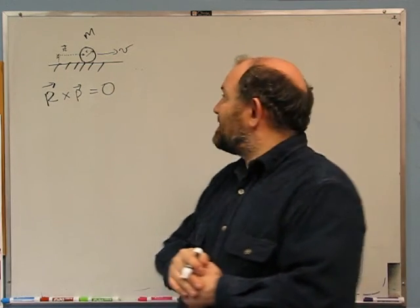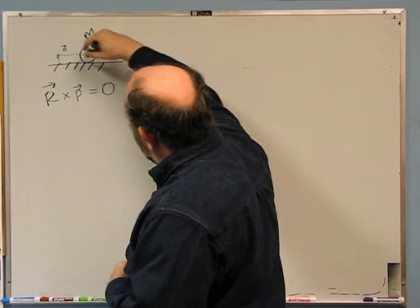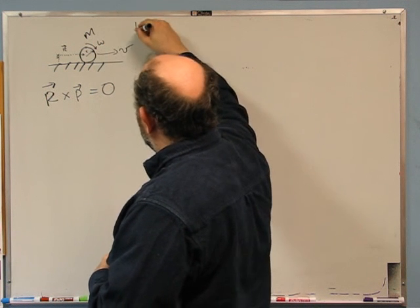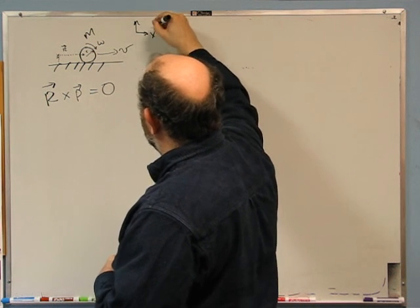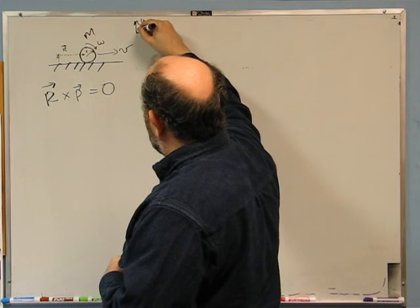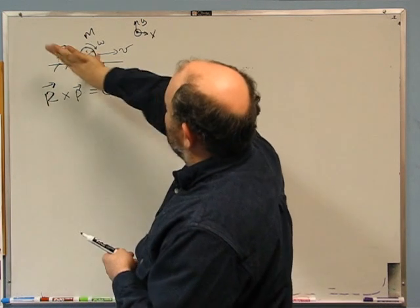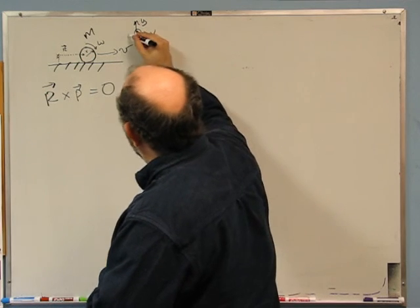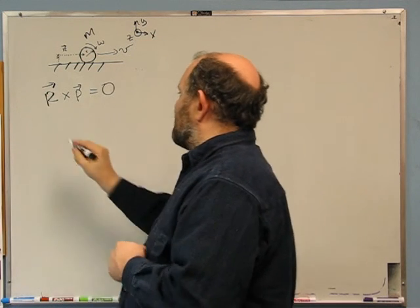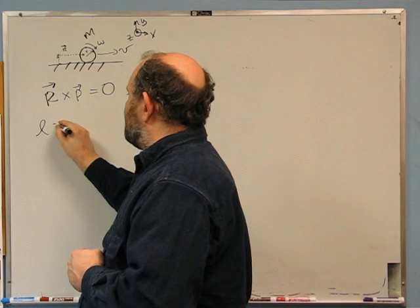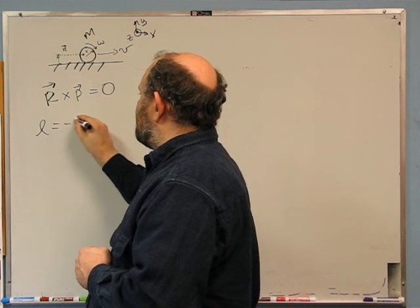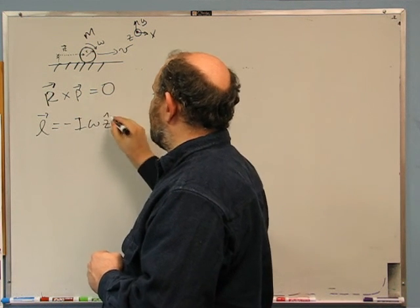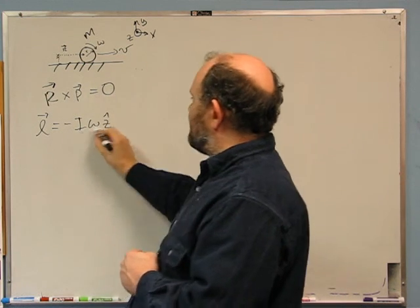The only angular momentum I have to worry about: if it's going this way, it means it has to be rolling like that. So there will be an omega this way. If I define the direction it's going as x and y is up, then omega's vector is into the board, or in the negative z direction.